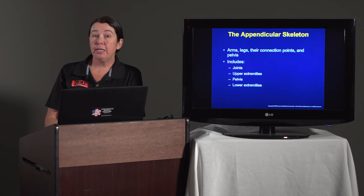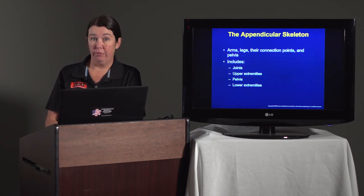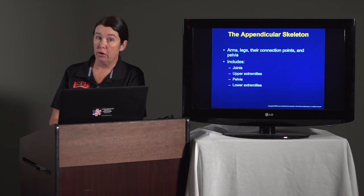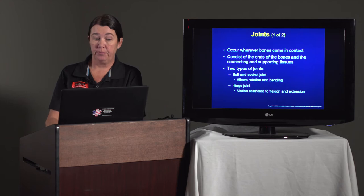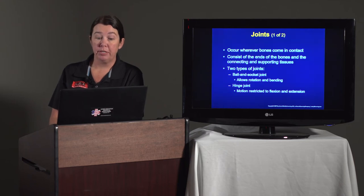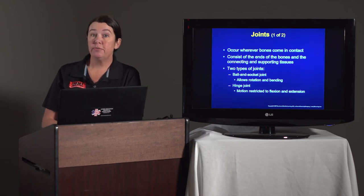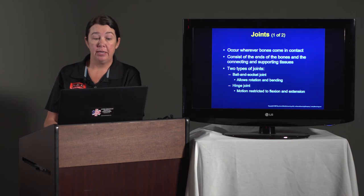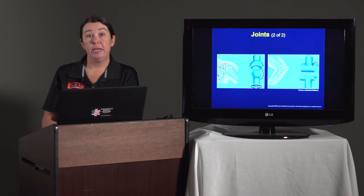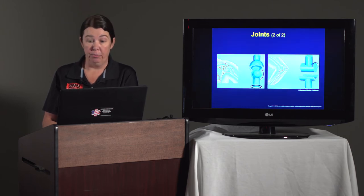The appendicular skeleton includes the arms, legs, their connection points, and the pelvis. This includes the joints, upper extremities, pelvis, and lower extremities. Joints occur whenever bones come into contact; they consist of the ends of the bones and the connecting and supporting tissues. Two types of joints include the ball and socket and a hinge joint. You would find a ball and socket in the hip and shoulder, and the hinge joint would be the knee and the elbow.